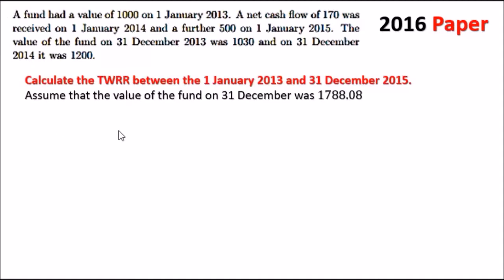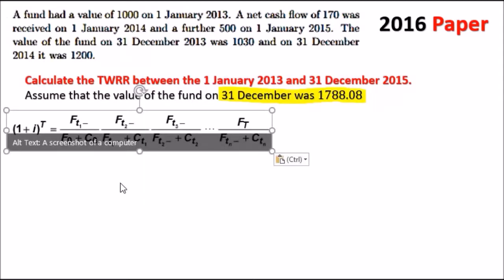They want us to calculate the TWRR between the 1st of January 2013 to the 31st of December 2015. Notice I added an extra year here. I just did this for the case of understanding how cash flows run. Because we have a second cash flow, we need a further point in time. We assumed that the fund on the 31st of December was 1,788.08. Let's crack on with the formula.